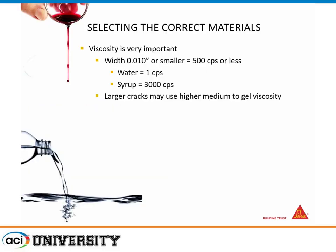Selecting the correct materials: in crack injection, strength is very important, but one of the main factors is viscosity. The closer to water your epoxy is, the easier it will be to force into smaller and smaller cracks. For cracks around 0.01 inches, 500 centipoise or less is the requirement, and typically they're even less than that — around 100 centipoise. For larger cracks, you can get away with slightly higher viscosity, up to 1,000 or 1,500 centipoise, but lower is typically better.